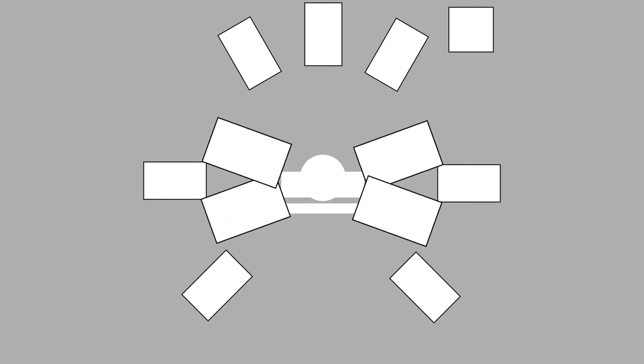We can also go beyond 360 sound and add speakers above the listener to create a height element to our audio. This is known as periphonic sound, but it's more frequently referred to as 3D surround. 360 surround surrounds you in two horizontal dimensions, while 3D surround surrounds you in a fully three-dimensional sound field. Most common in this field are 7.1.2, which has a stereo pair of speakers above the listener, and 7.1.4, which has a quadraphonic array above the listener.